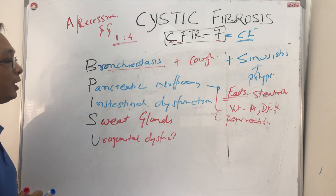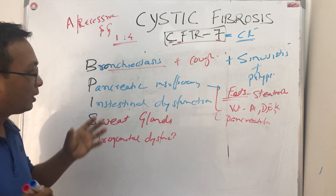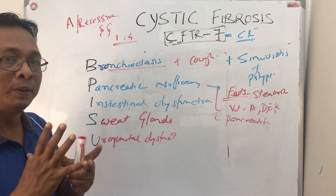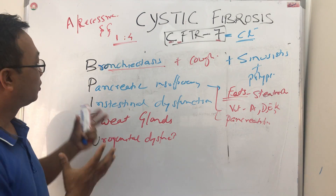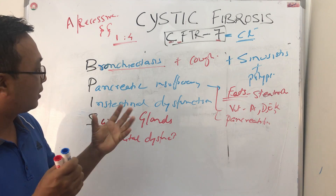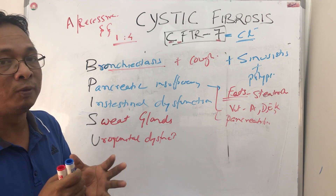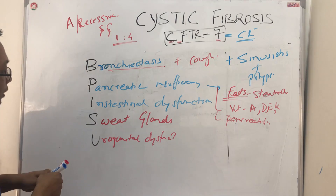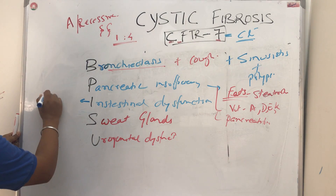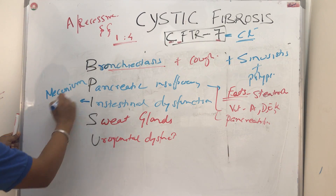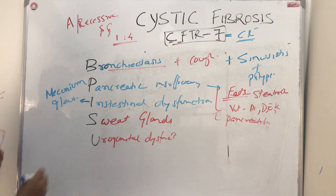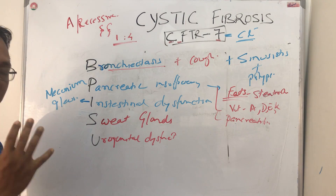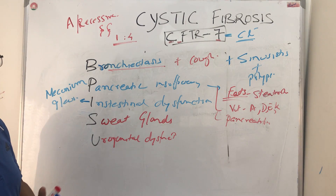I for Intestinal dysfunction — the same thing happens in the intestine: the intestinal secretions become dehydrated and thick. Cystic fibrosis is basically a dehydration condition throughout. This is more prominent in newborn babies, where there will be meconium ileus — meconium ileus is very prominent in newborn babies. And intestinal dysfunction is also common in older children.